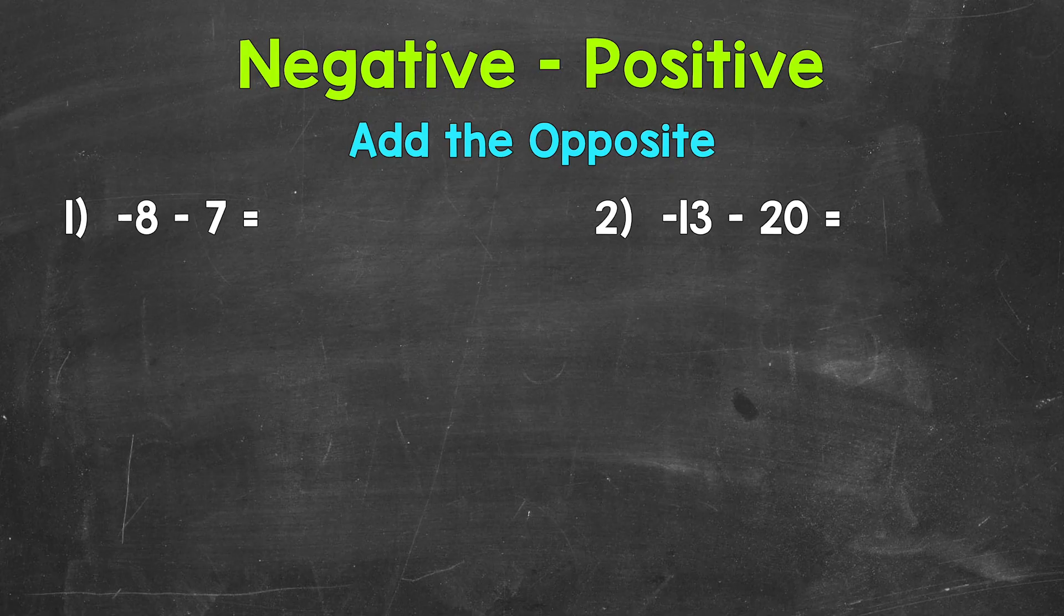So for number 1, we're starting at negative 8 and subtracting a positive 7. So we are decreasing in value by 7. Let's rewrite this problem, adding the opposite. So we start with negative 8, and then we add the opposite.